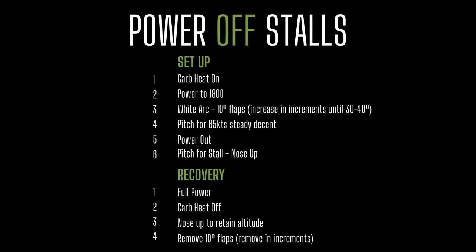Going over the power off stall again: carb heat on, power to 1800, wait for the white arc and progressively put in your flaps, pitch for 65 knots for a consistent descent, then power off and pitch for stall. Recovery: power on, carb heat off, immediate 10 degrees of flaps up, making sure you are at a neutral altitude, and continue to raise those flaps incrementally. Those are your two stalls: power on stall and power off stall. Hope this helps — I know it helps me to remember.